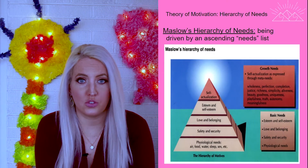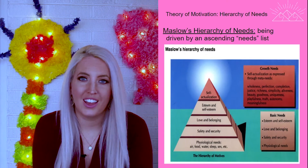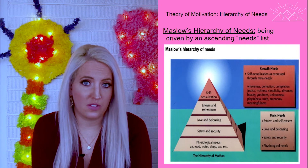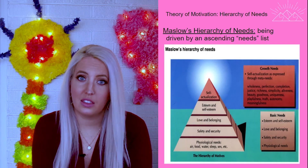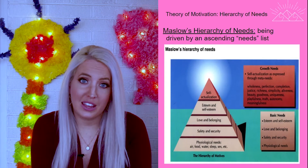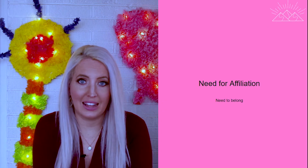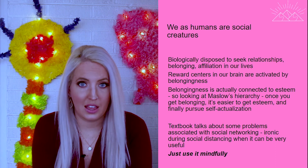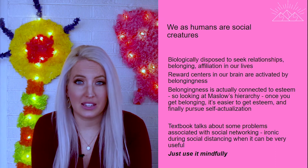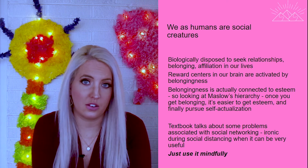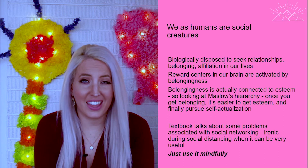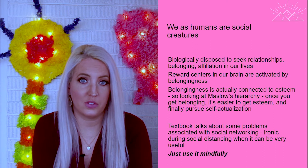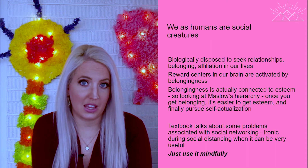It's easier to have esteem once we have belonging, according to Abraham Maslow, and so that is going to be a step in the direction towards our need for achievement. There are a lot of different modalities for achieving affiliation or belonging, including the internet. There are some really interesting studies that look at the two sides of social media and social networking — how it both helps and harms our need for affiliation. At the end of the day, using it mindfully seems to be the most effective way to use social media to reach our affiliation needs.